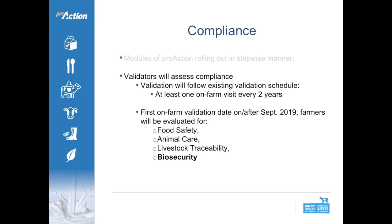Each province will have validators visiting each farm to assess compliance with Pro-Action requirements, following the existing schedule set up in those provinces. At least one on-farm visit will happen every two years for each producer. Generally, this follows an on-farm visit one year and a self-declaration year the following year, where the producer provides a written document confirming continued compliance. Some provinces may have more frequent on-farm validation, so check with your provincial coordinator for specific details.